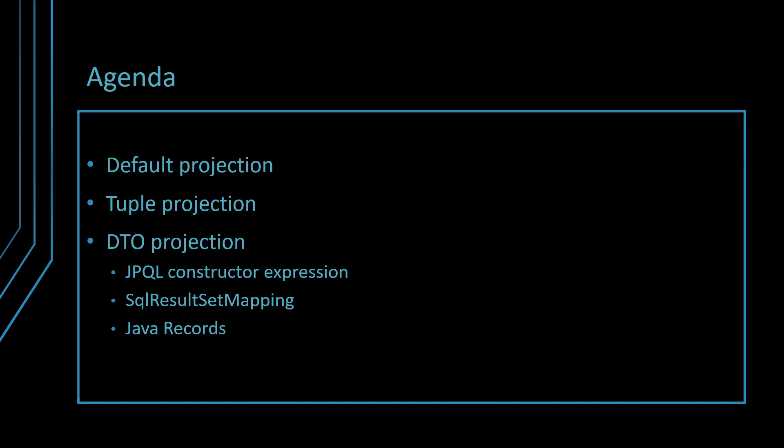First, I'm going to explain the default query projection when using JPA and Hibernate. Afterward, we're going to see how we can use the JPA Tuple container to reference the SQL projection column values by their aliases. Next, I'll explain how to create a DTO projection using the JPQL constructor expression as well as the SQLResultSetMapping annotation.